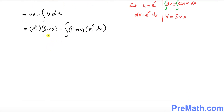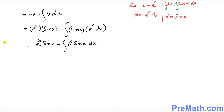Let's simplify a little further. We can write e^x·sine(x) minus the integral of e^x·sine(x) dx. The left-hand side is simply the integral of e^x·cosine(x) dx. I'm going to call this Equation Number One — keep that in mind.